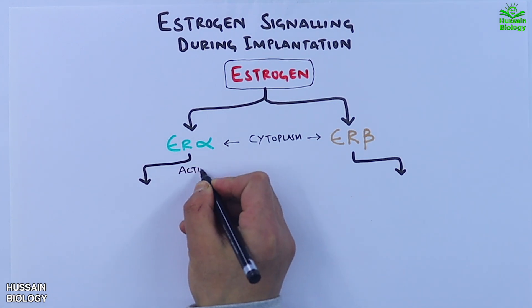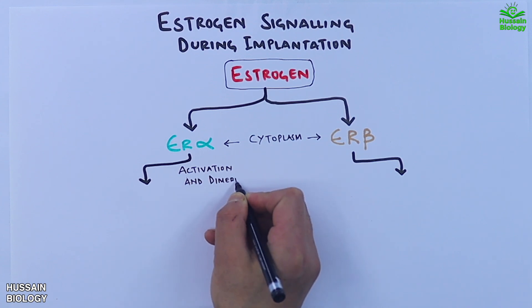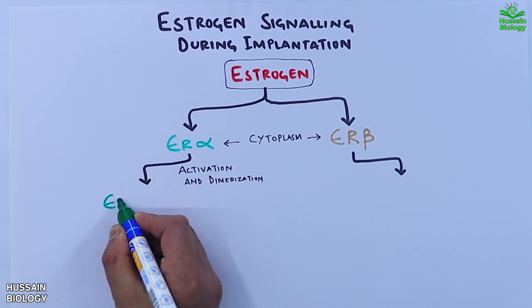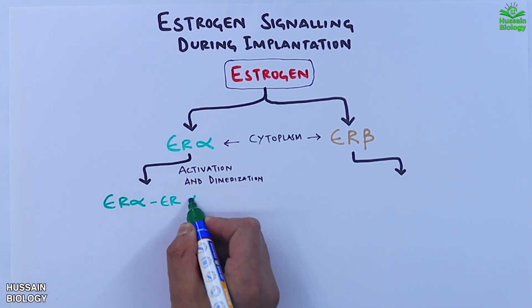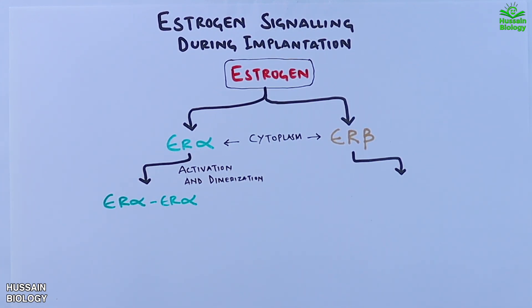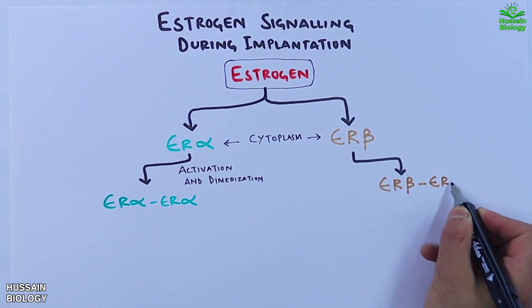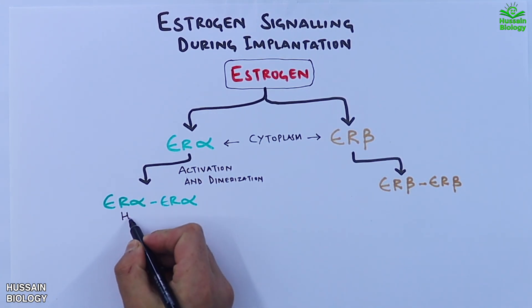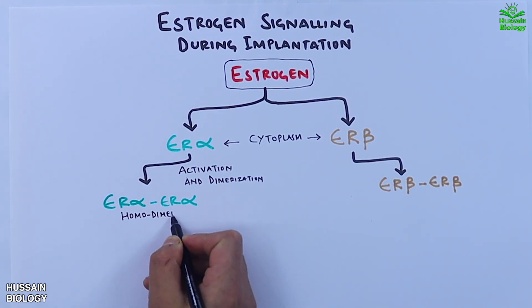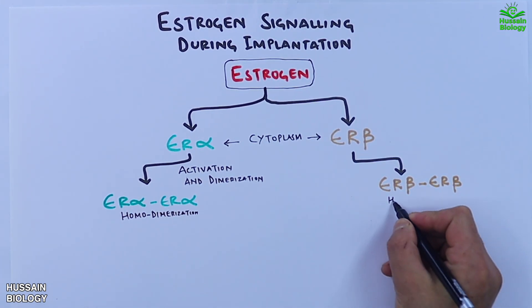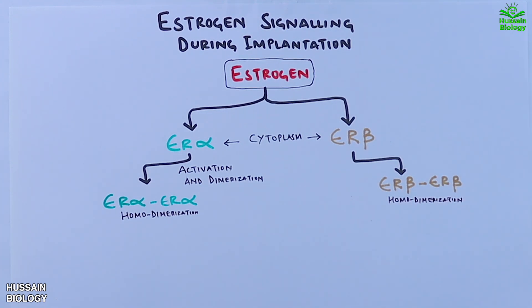ER alpha gets activated in response to estrogen and undergoes a process called dimerization, where two ER alpha molecules pair up to form what we call a homodimer — the ER alpha/ER alpha complex. Similarly, ER beta also dimerizes independently upon activation, resulting in a homodimer called the ER beta/ER beta complex.